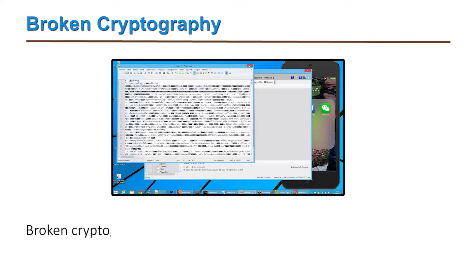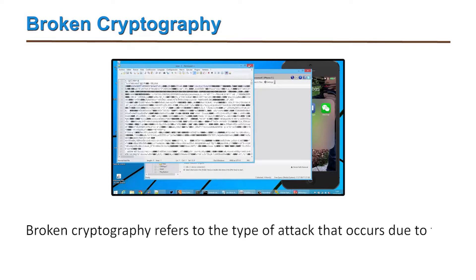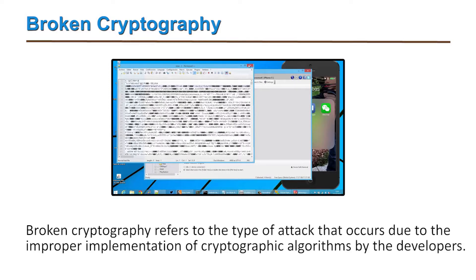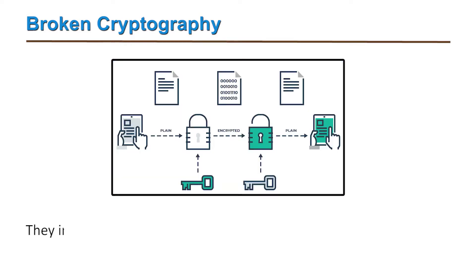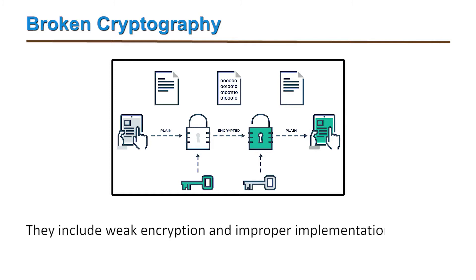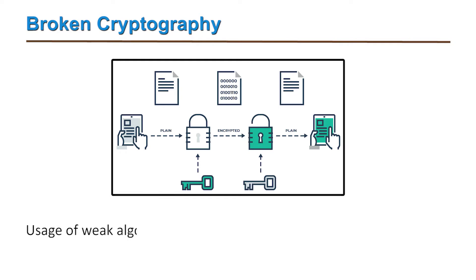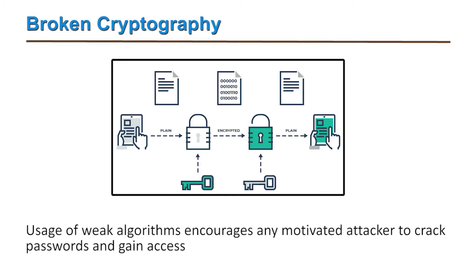The sixth threat is broken cryptography, which refers to attacks that occur due to improper implementation of cryptographic algorithms by developers. These include weak encryption and improper implementation of strong encryption. The use of weak algorithms encourages motivated attackers to crack passwords and gain access to systems.